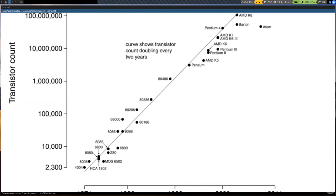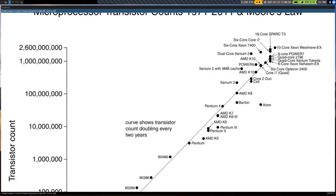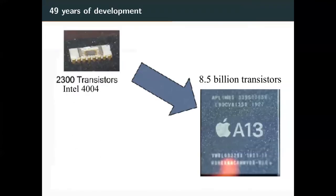On a log scale, a line means doubling. You can see way down here the number of transistors on the 4004 — about 2,300 — versus the enormous numbers today. It took 49 years to go from the Intel 4004 with 2,300 transistors to eight and a half billion on the A13 chip, with even more on the newer ones.